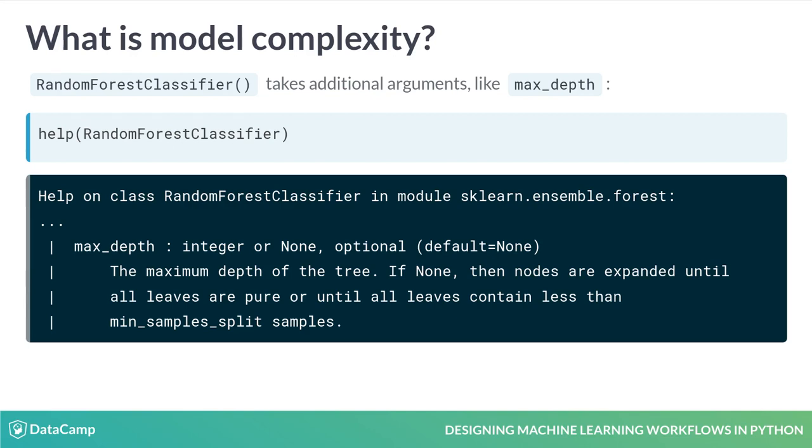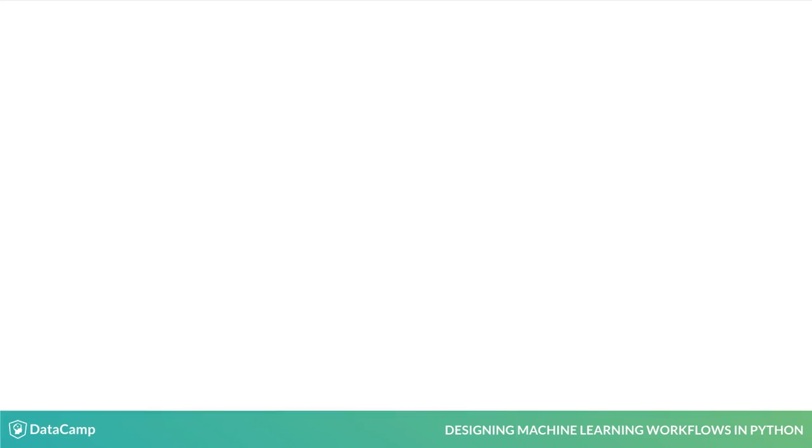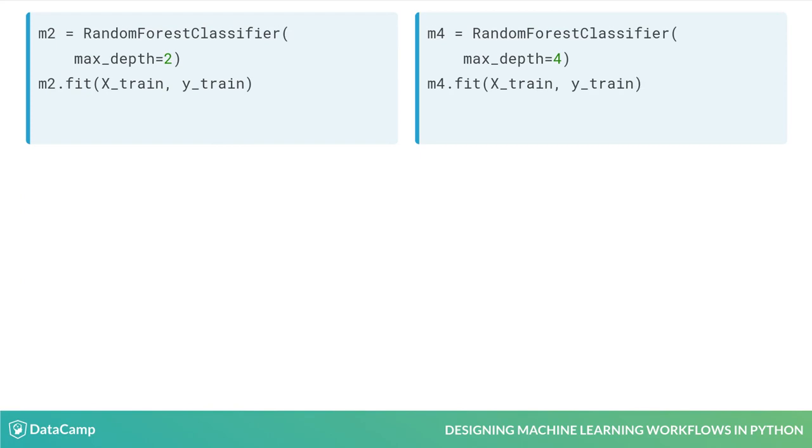Let's start by fitting a classifier with depth 2 and one with depth 4 to the credit scoring dataset from the previous lesson. How would a typical tree from each classifier look like? We can access individual trees using the private estimators_ attribute.